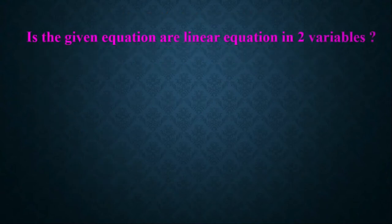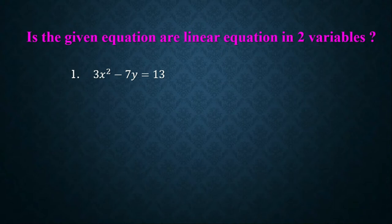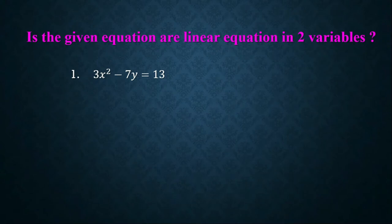Now we will check whether equations are linear or not. First: 3x² − 7y = 13. Here x and y are two variables. What is the power of x? It is 2. A linear equation means the power must be 1, but here the power of x is 2, so this is NOT a linear equation.